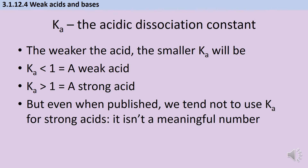The weaker the acid is, the smaller the Ka value will be. Any Ka value smaller than one implies a weak acid, because it tells you there must be a higher concentration of the undissociated acid than of the ions it breaks up into. Ka values are usually written in standard form, so you'd expect to see a negative power of 10 for a weak acid. Strong acids tend not to have a published Ka value because Ka tends to infinity, making it meaningless.